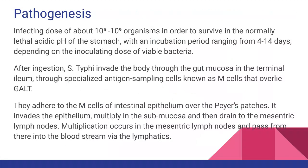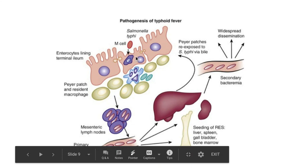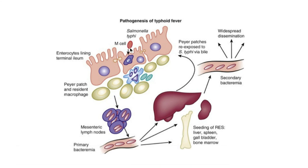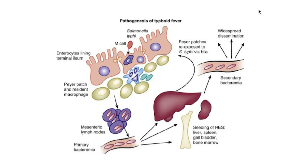The bacteria multiply in the submucosa and drain to the mesenteric lymph nodes, where further multiplication occurs. From there the organisms pass into the bloodstream via the lymphatics. In the diagram, you can see Salmonella typhi attaching to M cells, invading the epithelium, reaching the submucosa, then the mesenteric lymph nodes, and finally entering the bloodstream through the lymphatics.